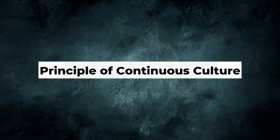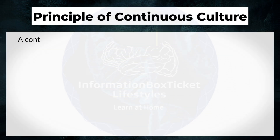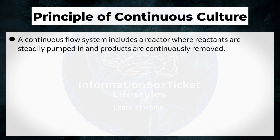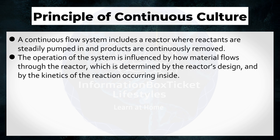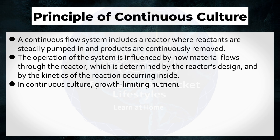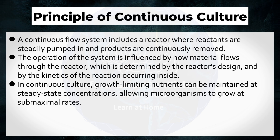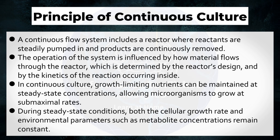Principle of Continuous Culture. A continuous flow system includes a reactor where reactants are steadily pumped in and products are continuously removed. The operation of the system is influenced by how material flows through the reactor, which is determined by the reactor's design and by the kinetics of the reaction occurring inside. In continuous culture, growth-limiting nutrients can be maintained at steady-state concentrations, allowing microorganisms to grow at sub-maximal rates. During steady-state conditions, both the cellular growth rate and environmental parameters, such as metabolite concentrations, remain constant.